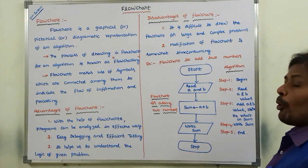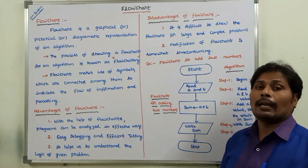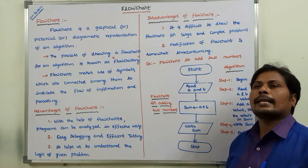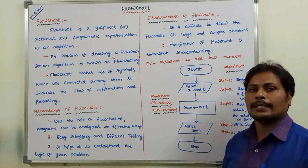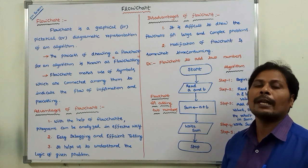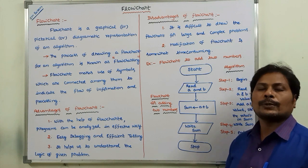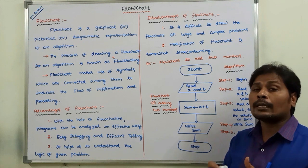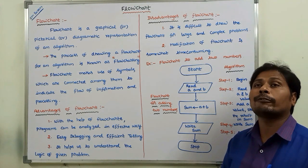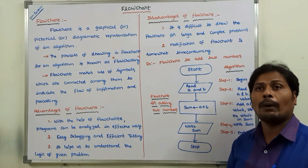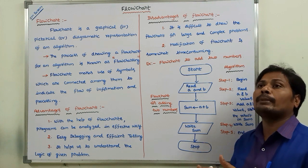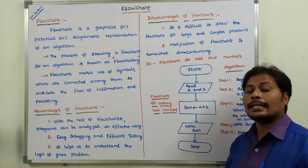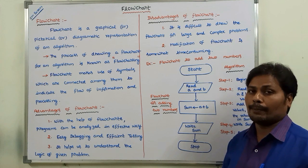The first point is: what is algorithm? An algorithm is a step-by-step procedure for solving a given problem. Suppose we are taking one problem — what are the steps we have to follow to solve that problem? These steps can be written step-by-step, and that is called an algorithm.